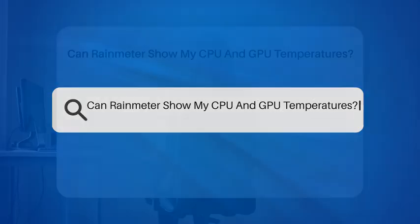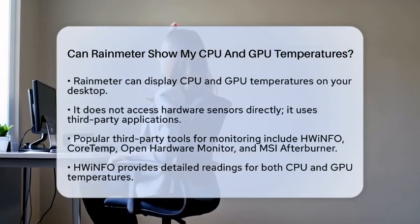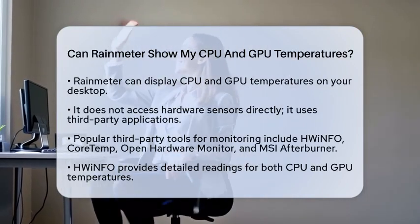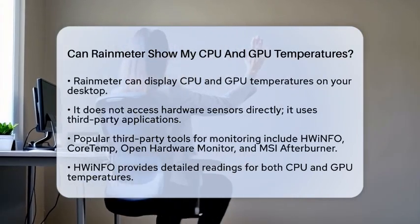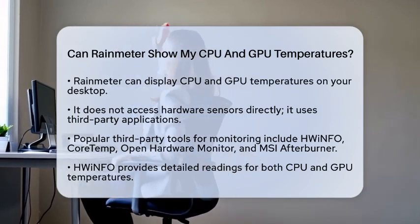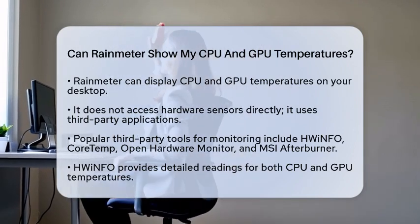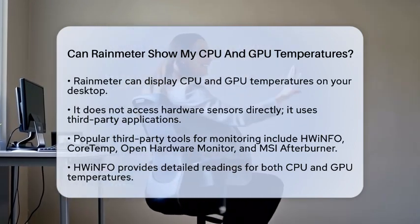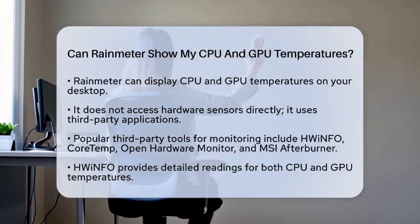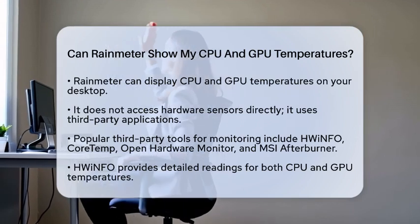Can RainMeter show your CPU and GPU temperatures? If you have ever wondered, you are in for a treat. The answer is yes, but there are a few steps involved to make it happen. RainMeter is a popular system monitoring tool that can display various information on your desktop, including temperatures. However, it does not access hardware sensors directly. Instead, it relies on third-party applications to gather that data.